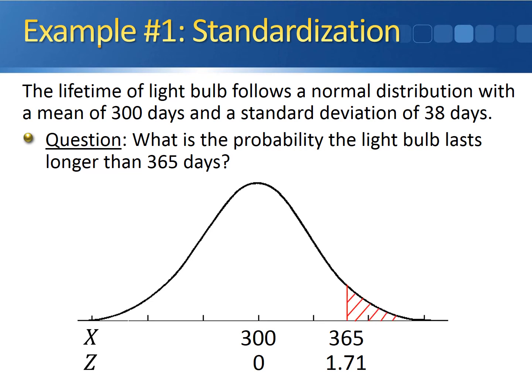What we want is this red shaded area — the area above 365 days — which is going to be exactly the same thing as the area above 1.71 on the standard normal distribution.